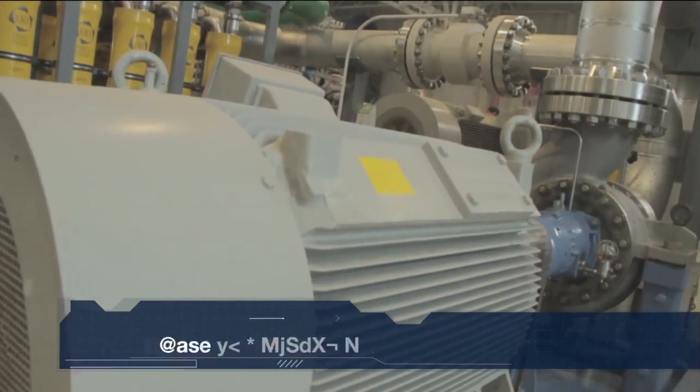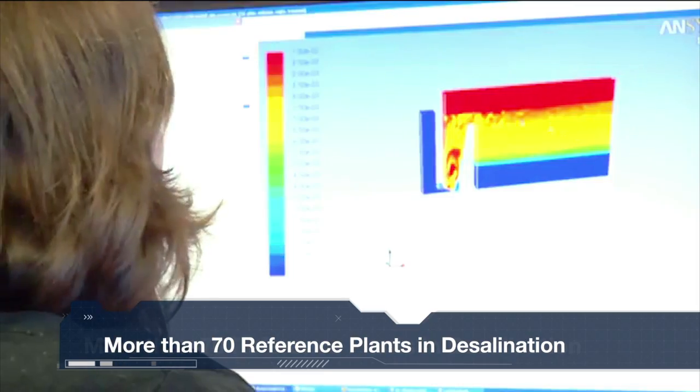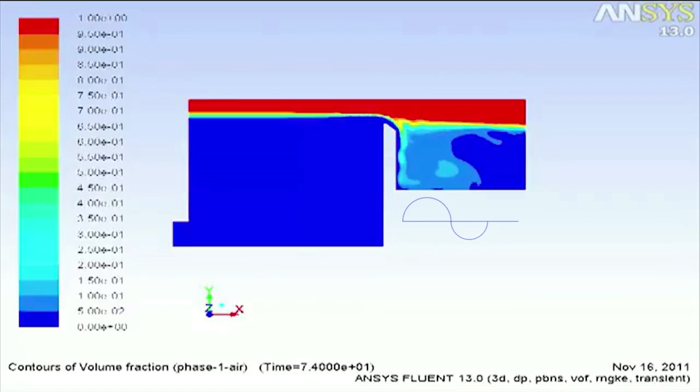Acciona Agua has more than 70 reference plants, with an installed capacity of near 3 million cubic meters per day.